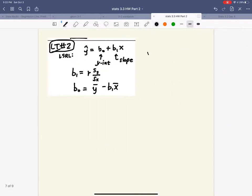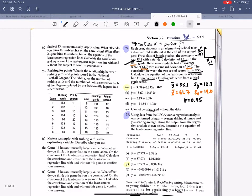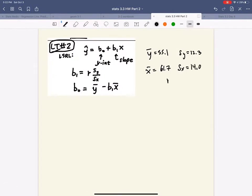Y bar is 55.1. S of y is 12.3. X bar is 61.7. And S of x, the standard deviation of x is 14.0. Last, r is 0.95. So we have all of the ingredients. I have all my ingredients to be able to use these formulas to create a least squared regression line, also known as a line of best fit. So let's do it.